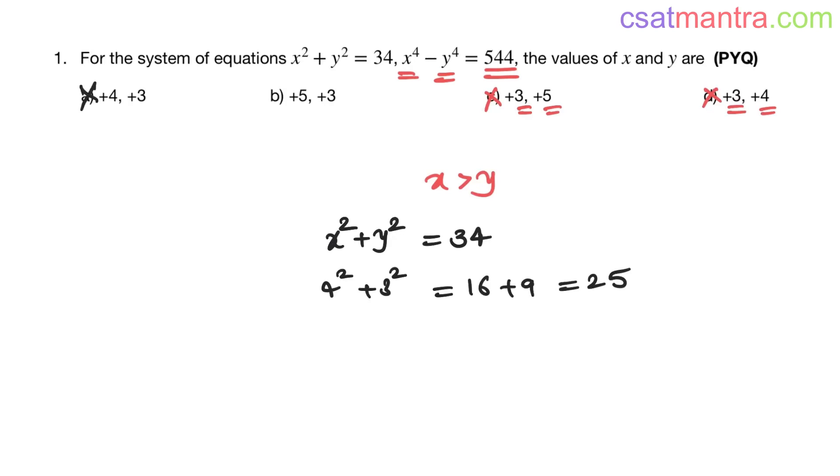Option B: 5² + 3² = 25 + 9 which is 34. So option B is the answer.